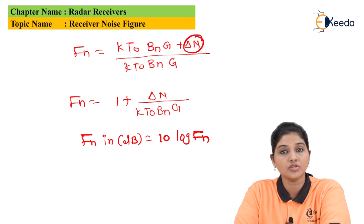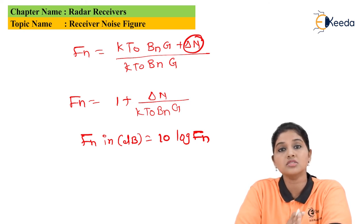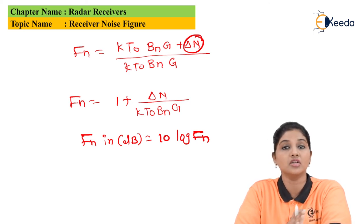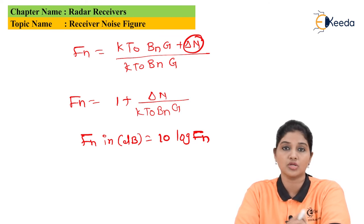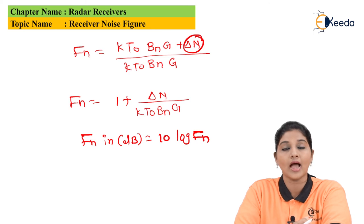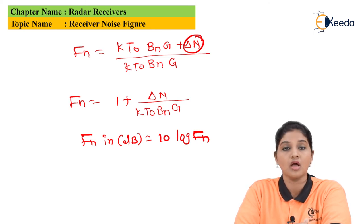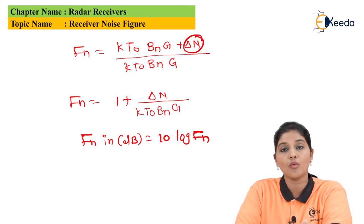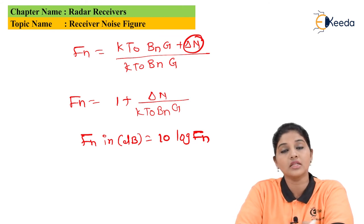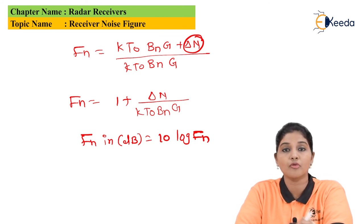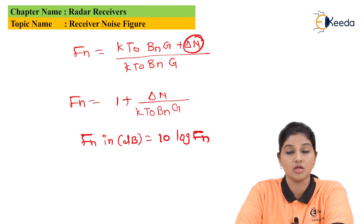In radar, noise is generated internal to the receiver, making it very difficult to remove. This affects system performance, and therefore the noise figure must be considered as one of the important parameters when selecting a receiver for proper application of the radar system.